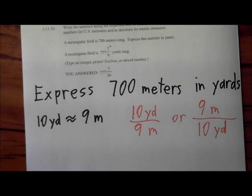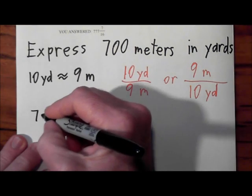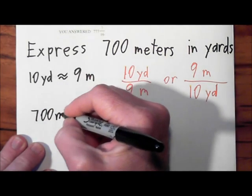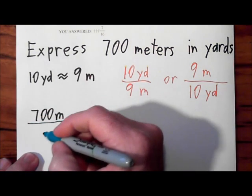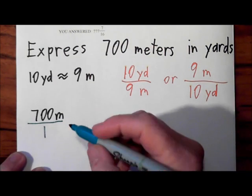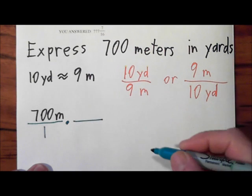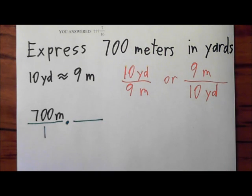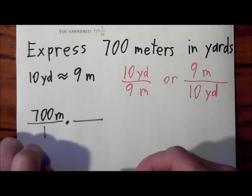We have 700 meters, and you just need to remember to put that over a one. You want this to be a fraction so we can cancel the units here. And now we're going to multiply this times something.